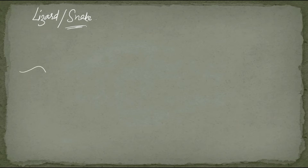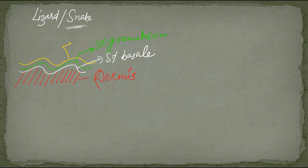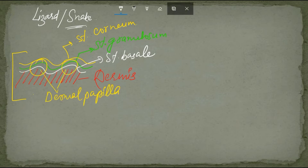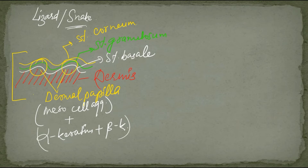For lizard or snake skin, the layers from bottom to top are: dermis, stratum basale, stratum granulosum, and finally the outermost stratum corneum. There is also a dermal papilla. During formation of the epidermal scale in lizards or snakes, mesodermal cells aggregate in the dermal papilla, followed by alpha keratin and beta keratin formation.